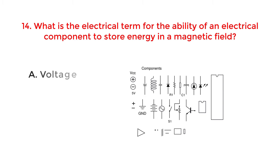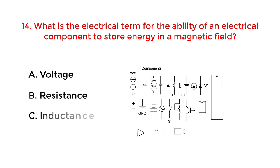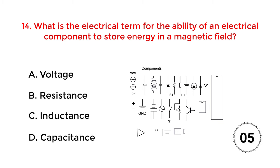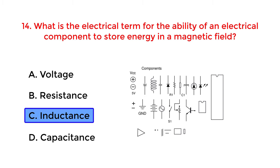What is the electrical term for the ability of an electrical component to store energy in a magnetic field? A. Voltage. B. Resistance. C. Inductance. D. Capacitance. The correct answer is option C: Inductance.